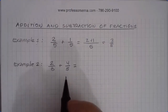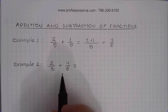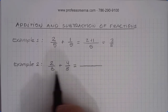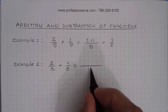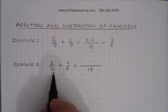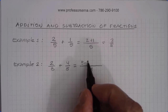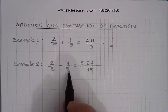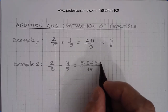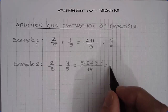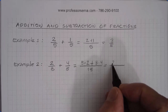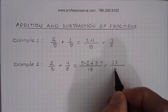When adding and subtracting fractions with different denominators, find the smallest number that is a multiple of both. That number is 15. Then divide 15 by 3, which gives you 5, and multiply by 2. And divide 15 by 5, which gives you 3, and then multiply by 4. This gives 10 and 12. 10 plus 12 is 22 over 15. That is our answer.